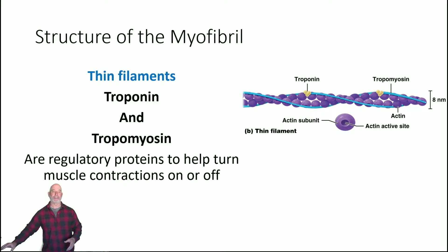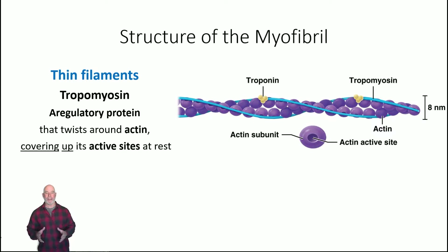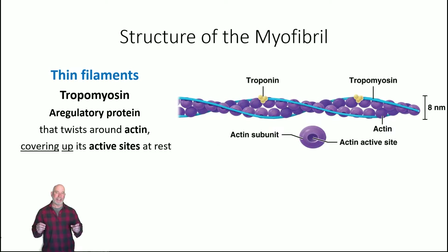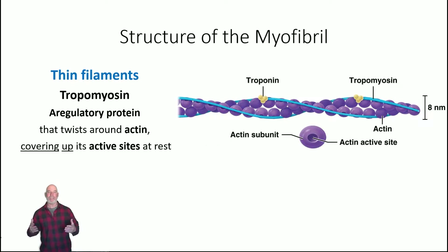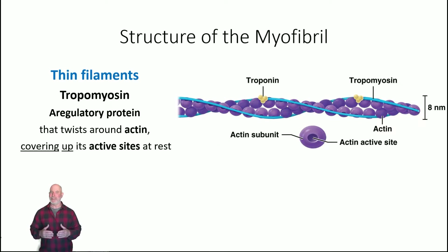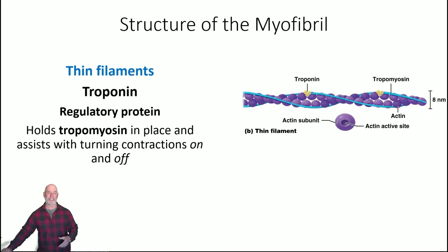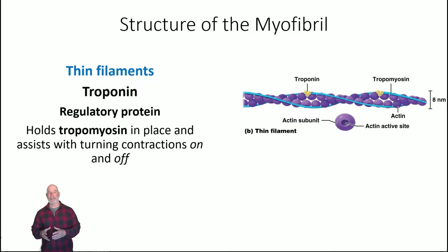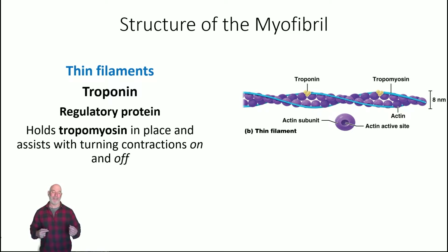This is regulated by two proteins: troponin and tropomyosin, which help control when a muscle contraction is turned on and off. Tropomyosin is a regulatory protein that twists around the actin and covers up the active site — if the active site is covered, the myosin heads can't bind and there's no muscle contraction. Troponin holds the tropomyosin in place and assists with turning contractions on and off by moving the tropomyosin off the active sites when a signal arrives.